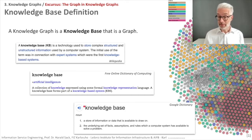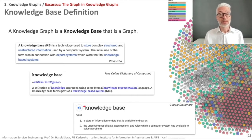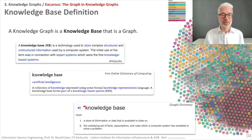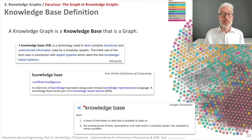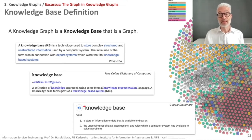A very brief definition of a knowledge graph is that it is a knowledge base that is simply a graph. Looking at the first part of this definition: what is a knowledge base? According to the online dictionary of computing, which is more relevant for us, a knowledge base is a term related to artificial intelligence — a collection of knowledge expressed using some formal knowledge representation language. A knowledge base forms part of a knowledge-based system.